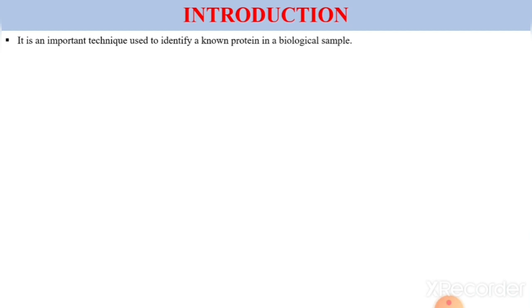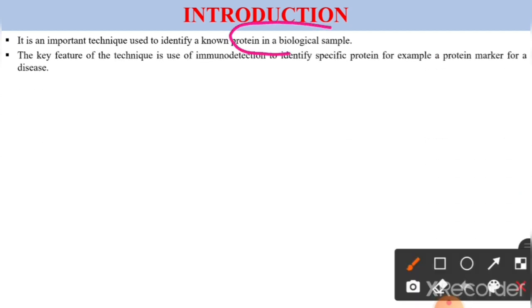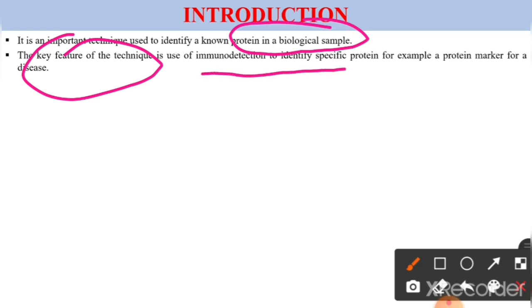The dot blot technique is a very important technique which is used to identify a known protein in a biological sample — whatever that biological sample may be. The most important key feature of this technique is the use of immunodetection to identify a specific protein. For example, for each and every disease there is a protein marker, and that protein marker can be identified with the help of dot blot technique.